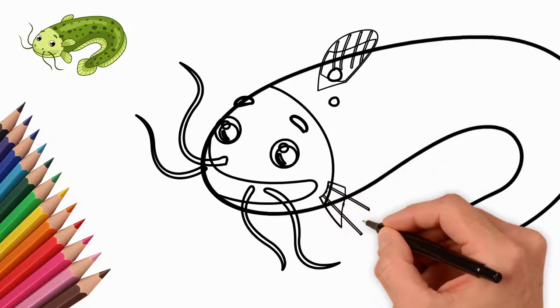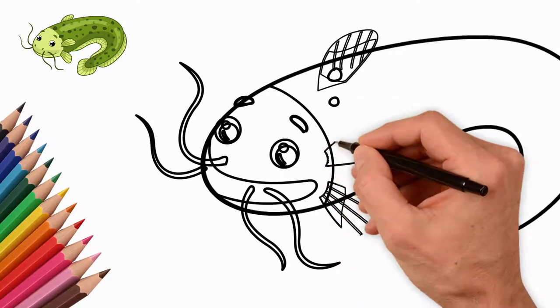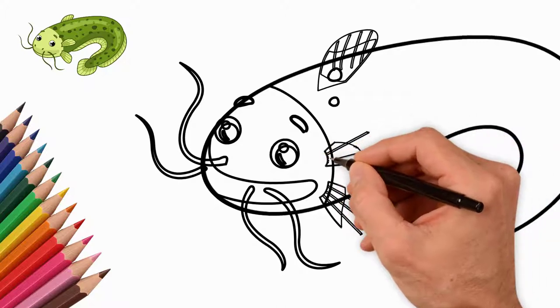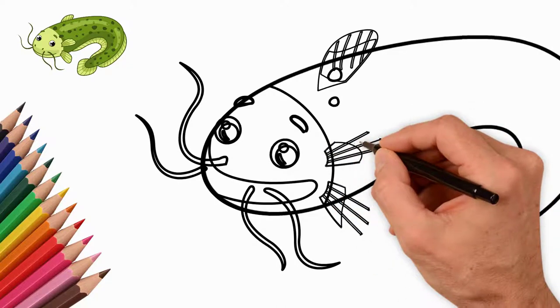Next, draw the fins. First, draw the fin on top of the body of the fish. At the bottom of the catfish's head draw another fin.